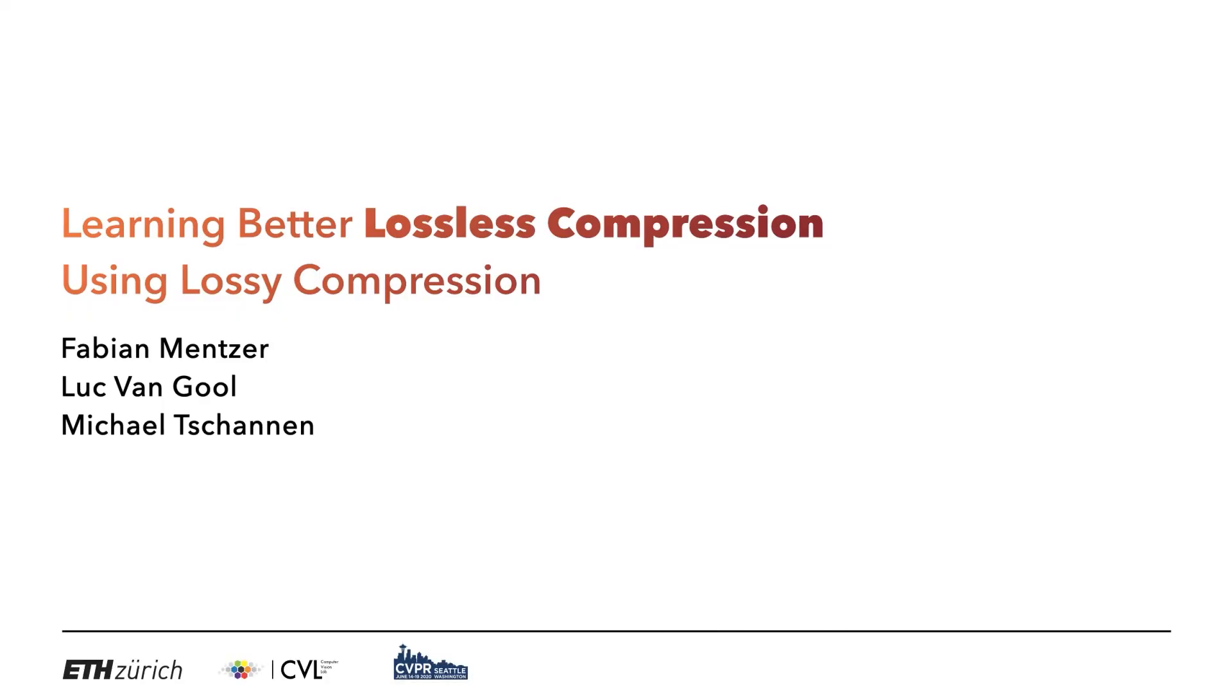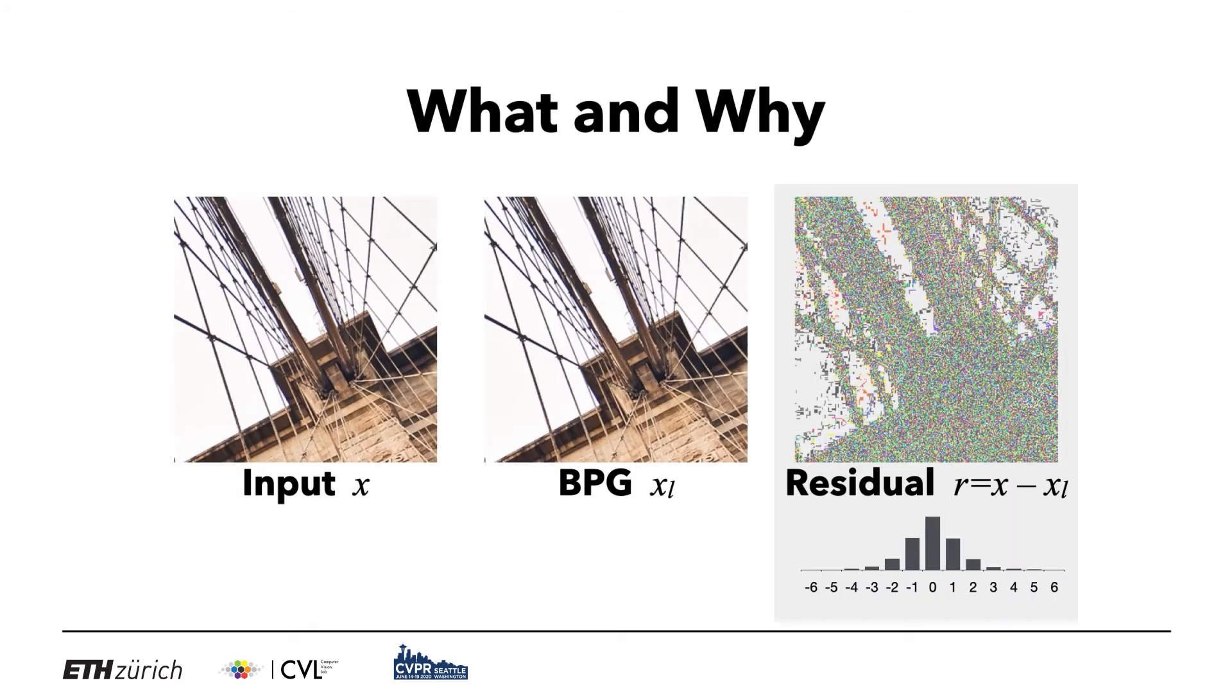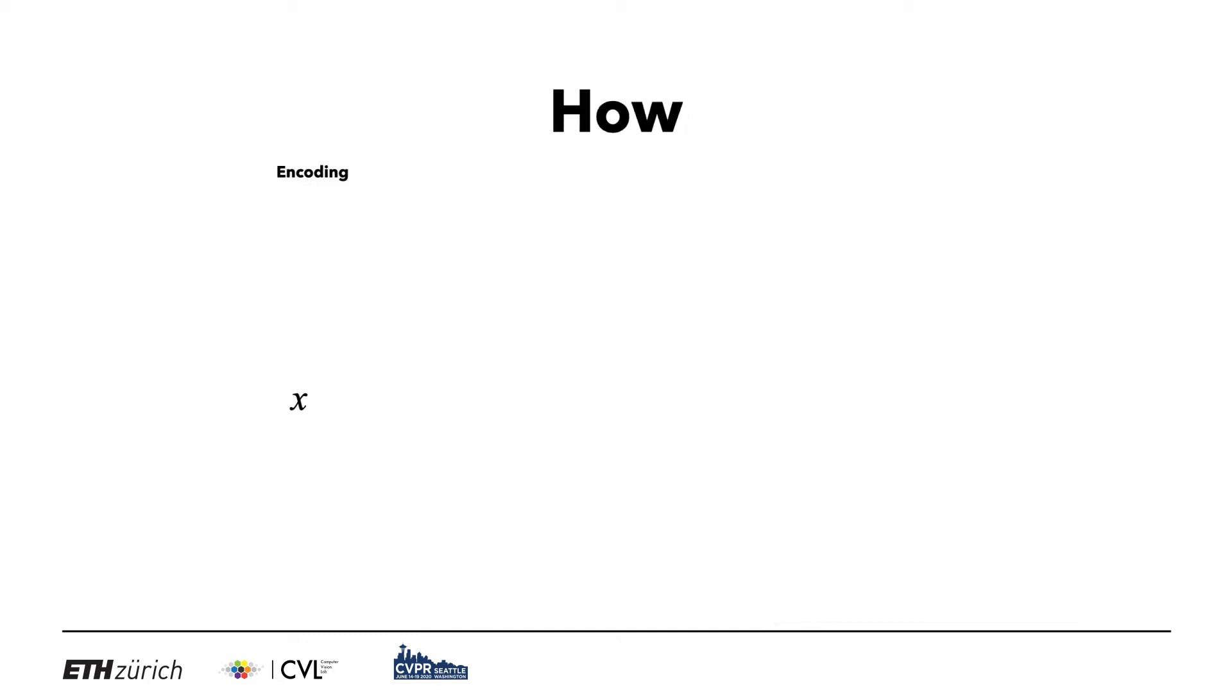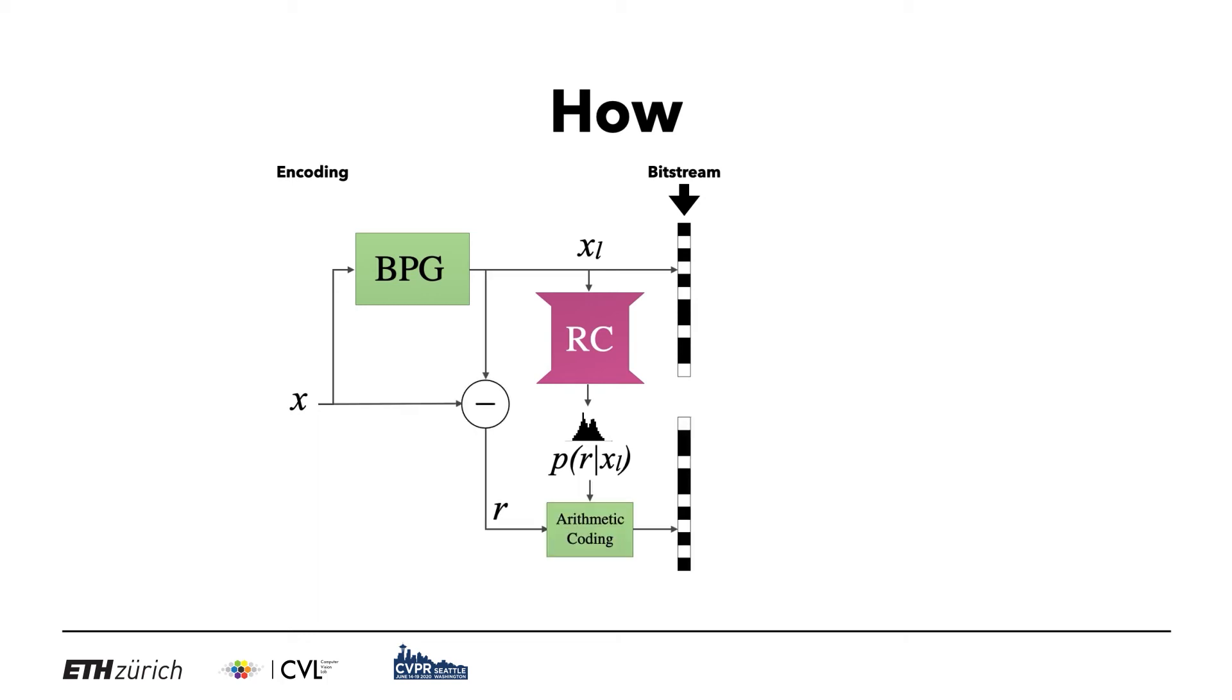The idea of this paper is to do lossless compression using the powerful lossy compression algorithm BPG. This is motivated by the fact that BPG achieves very high PSNR, meaning that the residual R between the lossy reconstruction and the input is clustered around zero. We store this residual as follows. First, we encode X using BPG and obtain the lossy image XL. We save it to the bitstream. Then we feed XL to a learned CNN that predicts the probability distribution P of R given XL. Now we can encode the residual using this probability distribution with arithmetic coding. This produces another bitstream encoding R.